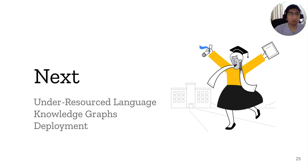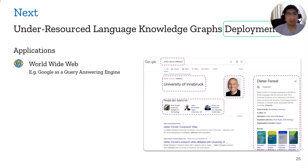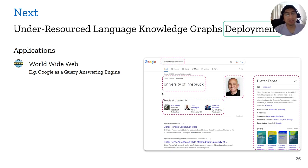Looking ahead, once we have knowledge graphs developed for under-resourced languages, they could be widely used in applications. Current knowledge graphs from Google, Amazon, and Facebook are already deployed on the web — for instance, when you search for a person on Google, the structured knowledge panels on the right side are extracted from a knowledge graph, not random reasoning. These are knowledge graphs of biographies, places, and more. This becomes possible for any language once we have its own knowledge graph.